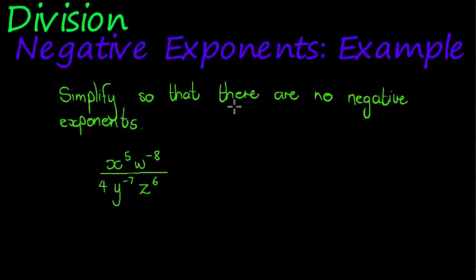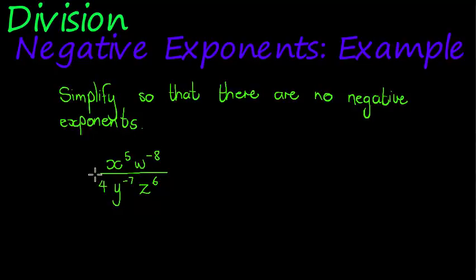In this video I want to show you how to simplify so that there are no negative exponents. Here is an example: we have x to the power of 5, w to the power of negative 8, and this term is divided by 4y to the power of negative 7.